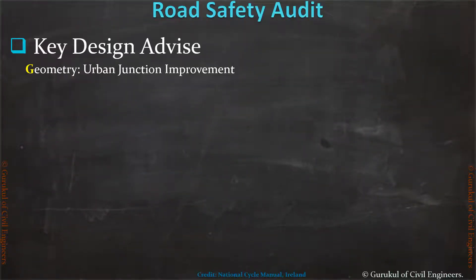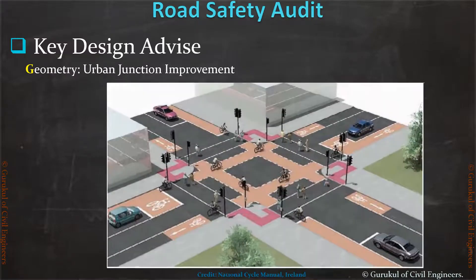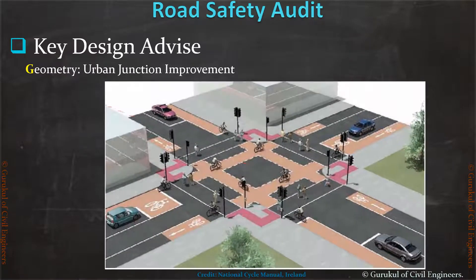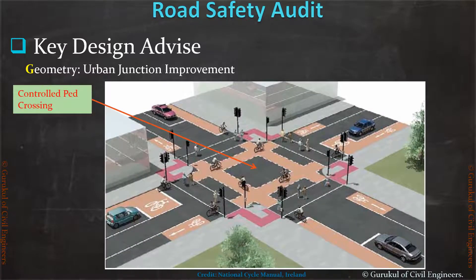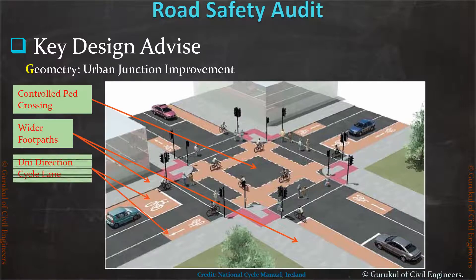I will share how to improve an urban road junction, including how to provide controlled pedestrian crossings, wider footpaths, and unidirectional cycle lanes.